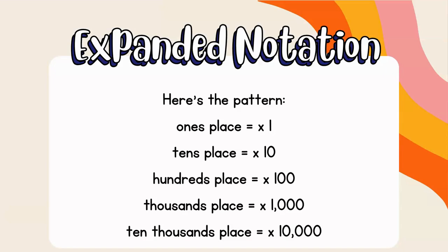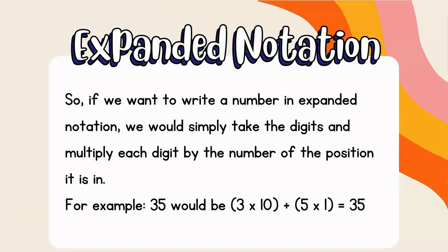Here's the pattern: if the digit is in the ones place, you're going to multiply it by one. If the digit is in the tens place, multiply that digit by ten. If it's in the hundreds place, multiply that digit by one hundred. If it's in the thousands place, multiply it by one thousand. If it's in the ten thousands place, multiply it by ten thousand. And if it's in the hundred thousands place, you're going to multiply it by 100,000.